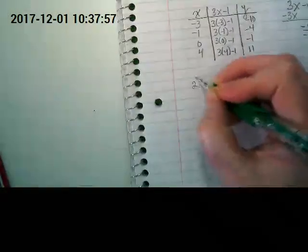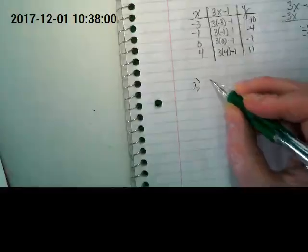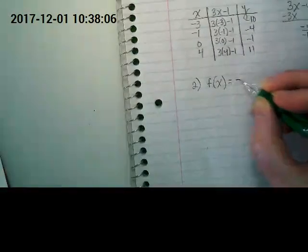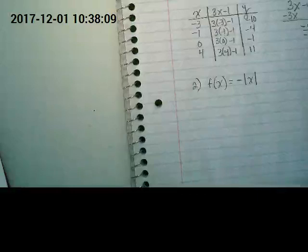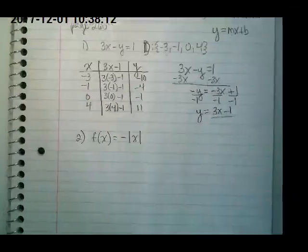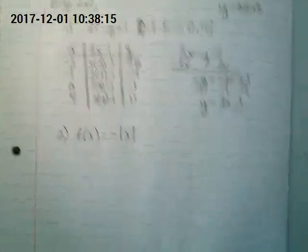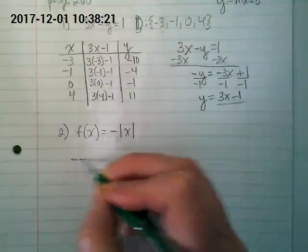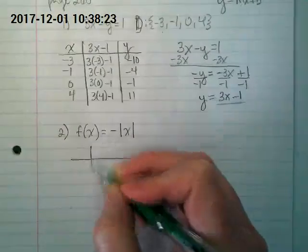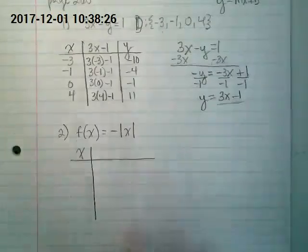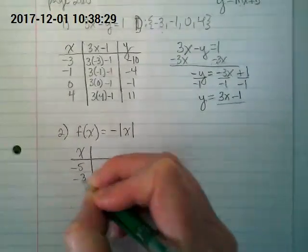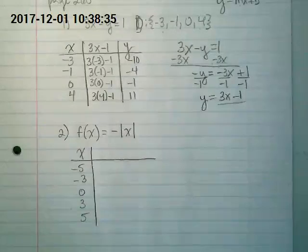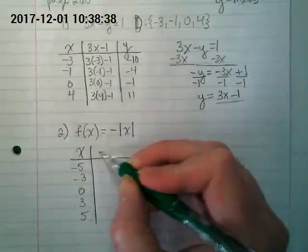Okay, let's try number 2 together. Go back to our binder paper which in this case we're doing in our spiral as an example. I'm going to write down number 2. This one doesn't have a y. It has that fancy version of y. f of x is equal to negative absolute value of x. And it's giving us a domain again.